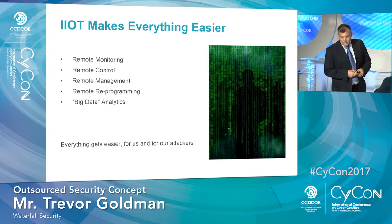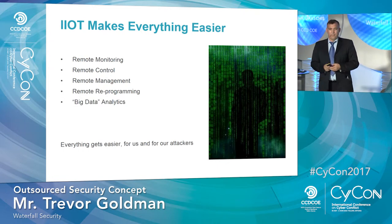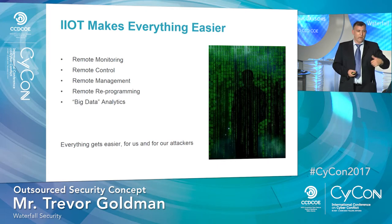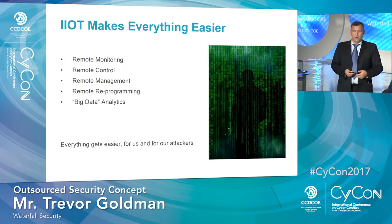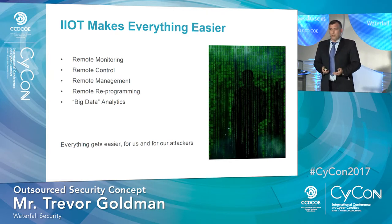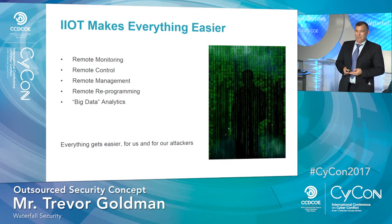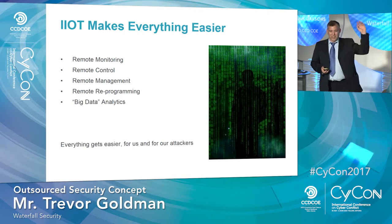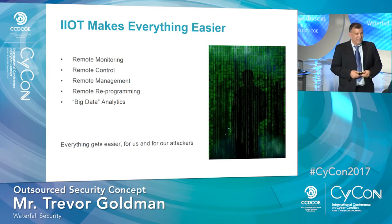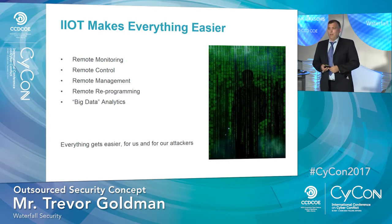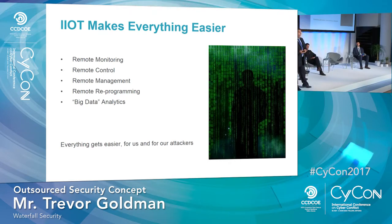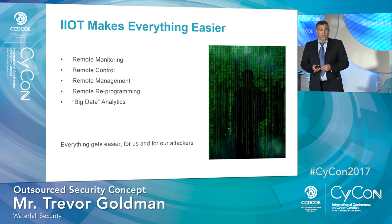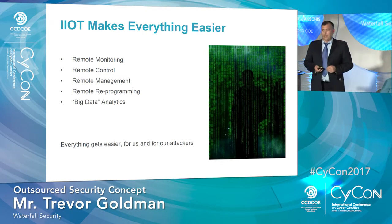Let's back up to the internet of things — we all know what IoT is, making dumb devices smart. We've got lights, cameras, and even connected toasters now. The industrial internet of things says that everything is going to get easier for our industry: remote monitoring, remote control, remote management, remote reprogramming of devices, and big data analytics. The problem is that while everything gets easier for us, we're also making everything easier for our attackers.